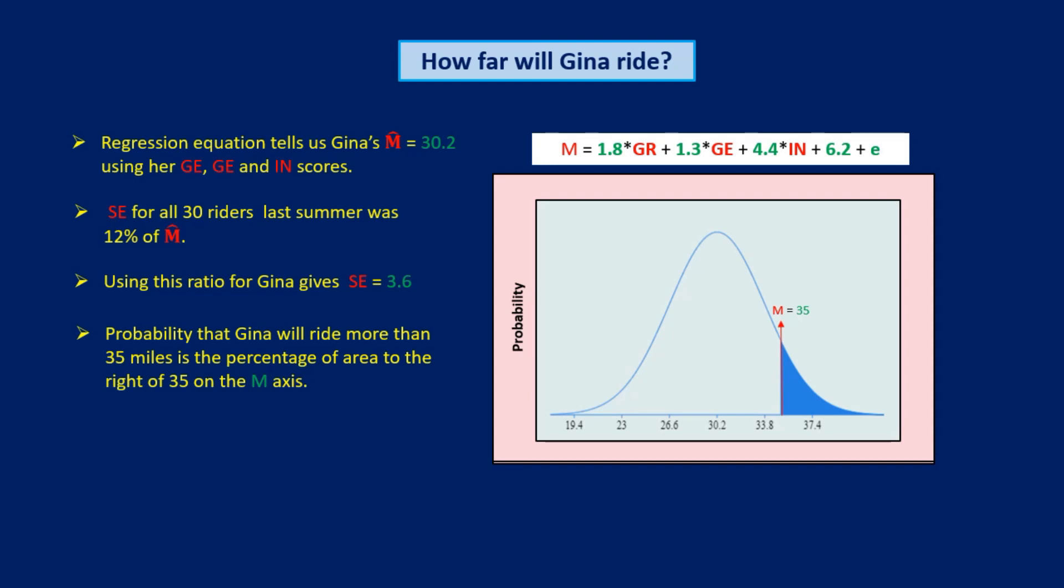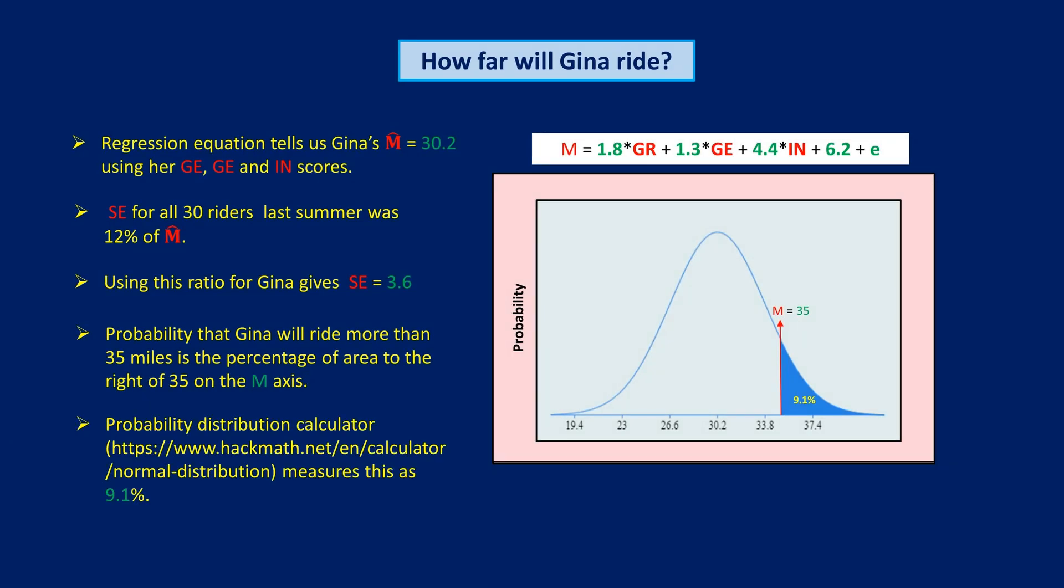Using the Hack Math calculator, I enter the mean and SE of Gina's probability distribution, and I specify the value of 35 on the X-axis. Hack Math tells me that the percentage of the area under the curve lying to the right of 35 is 9.1%. So there's a 9.1% chance that Gina will ride more than 35 miles in next summer's rally.